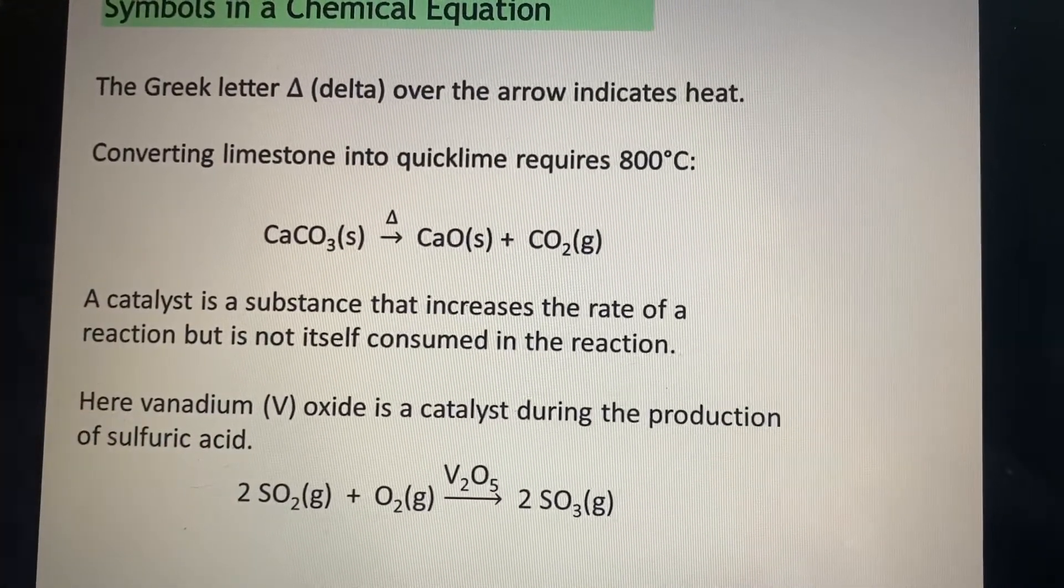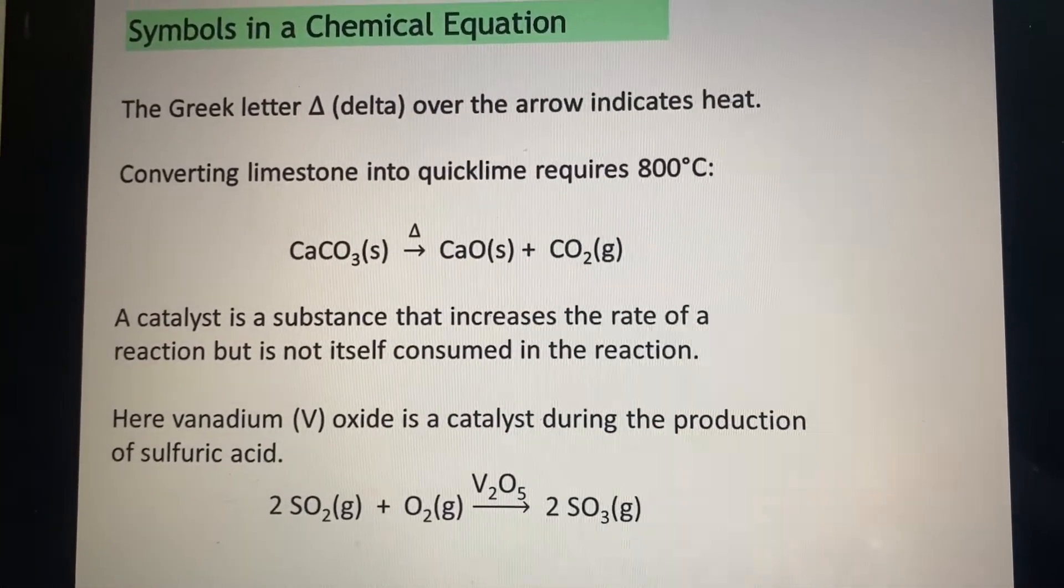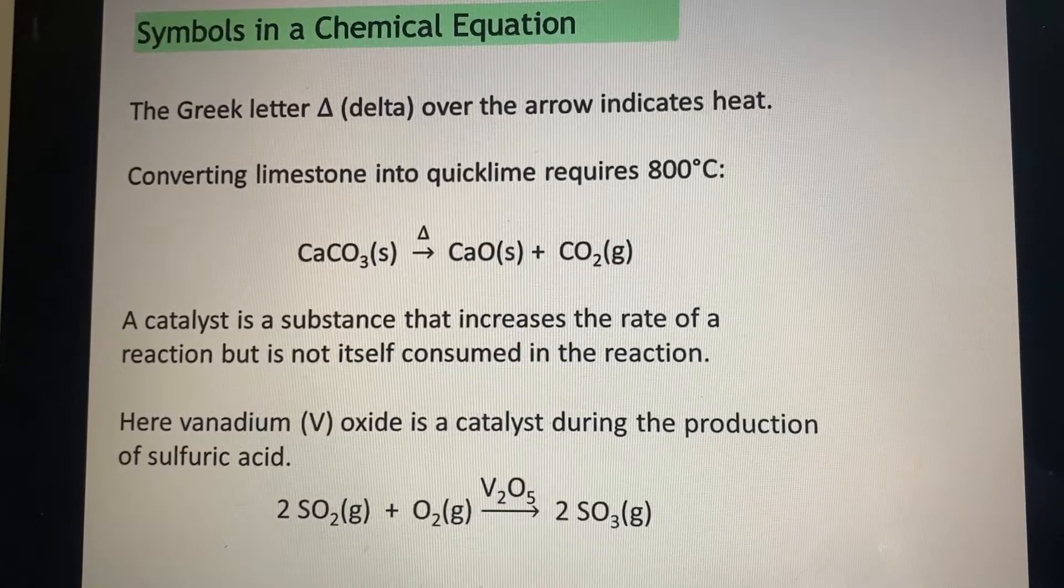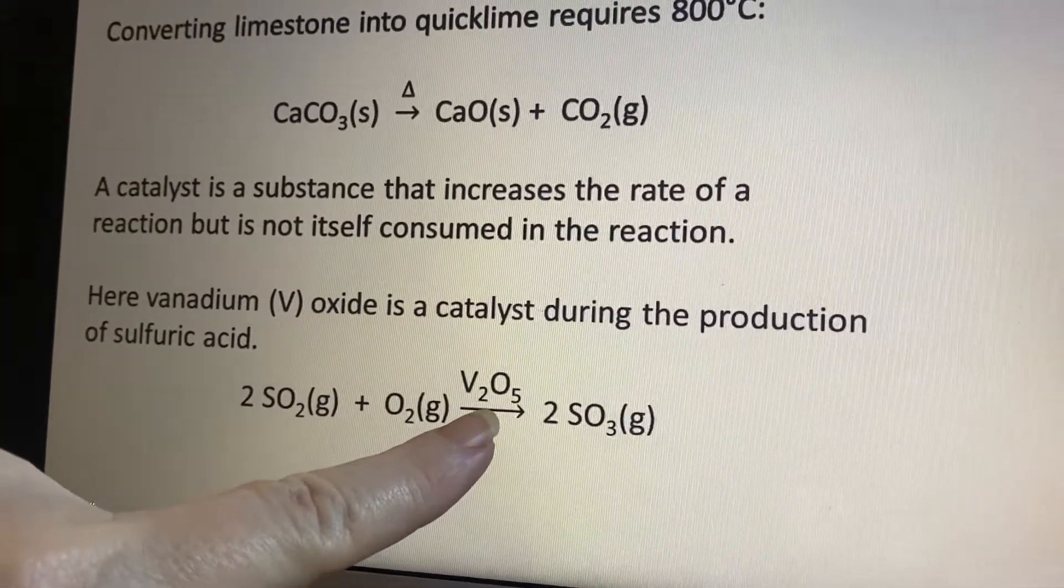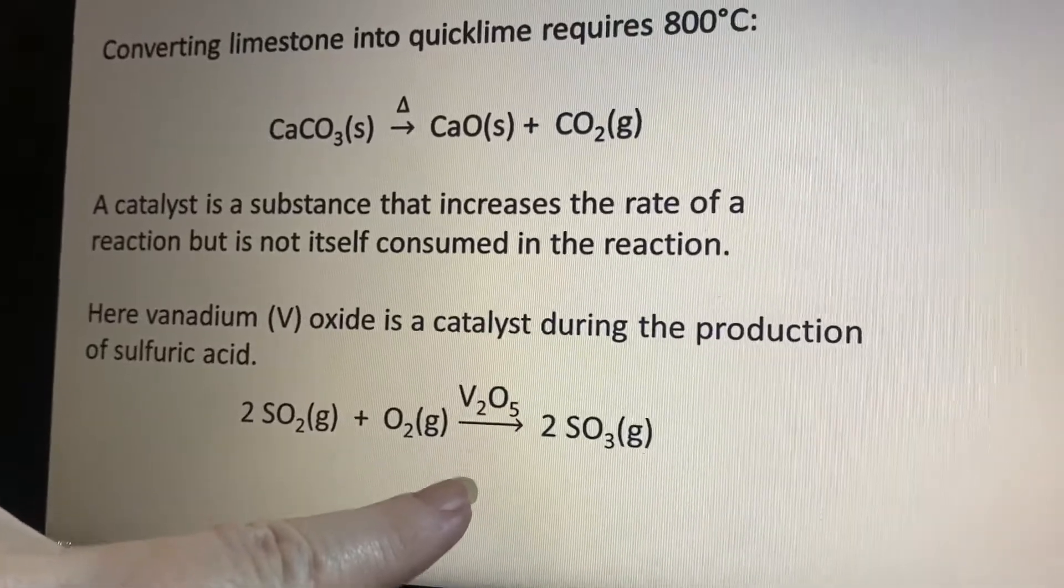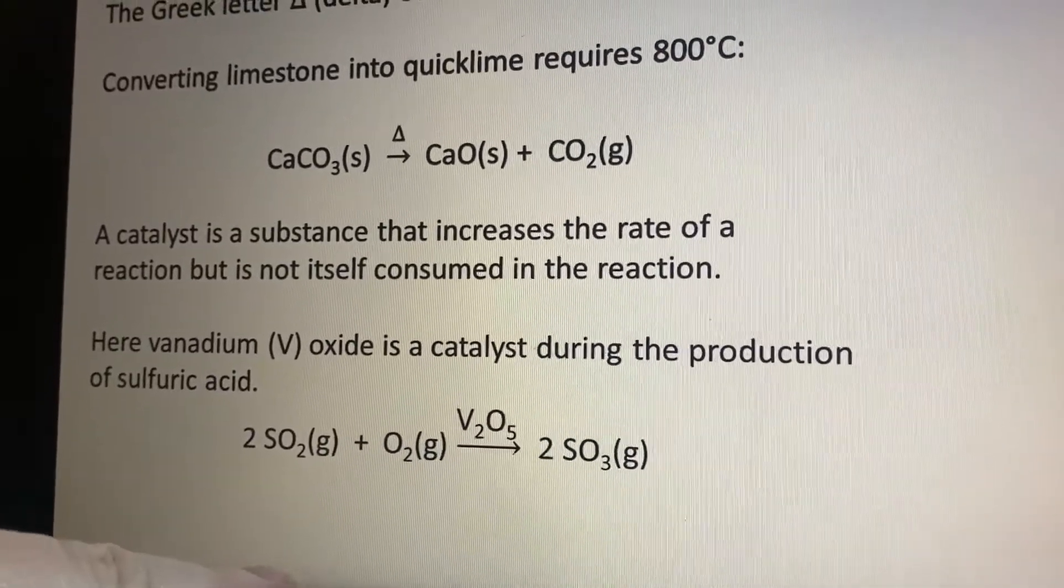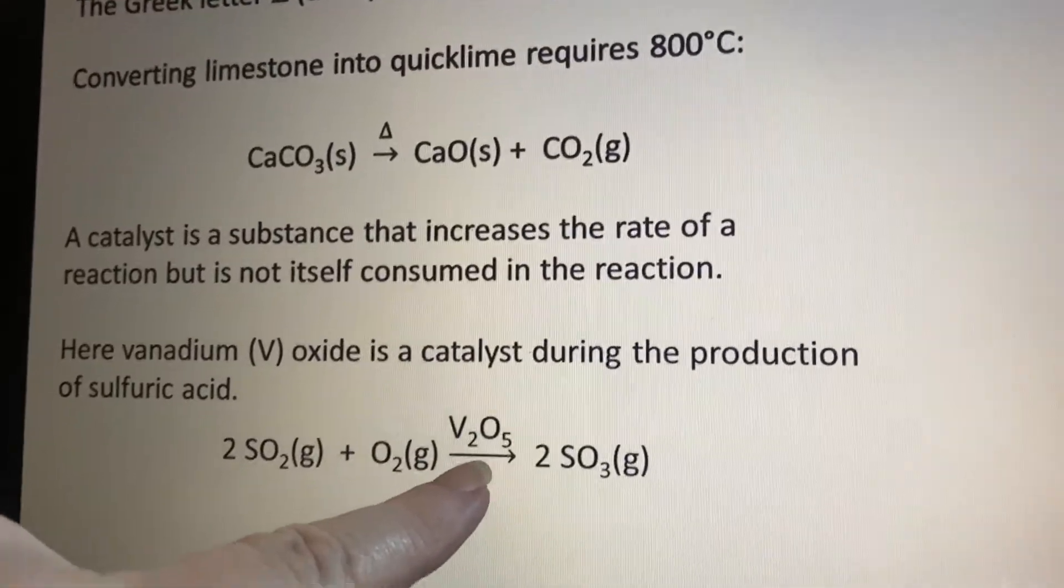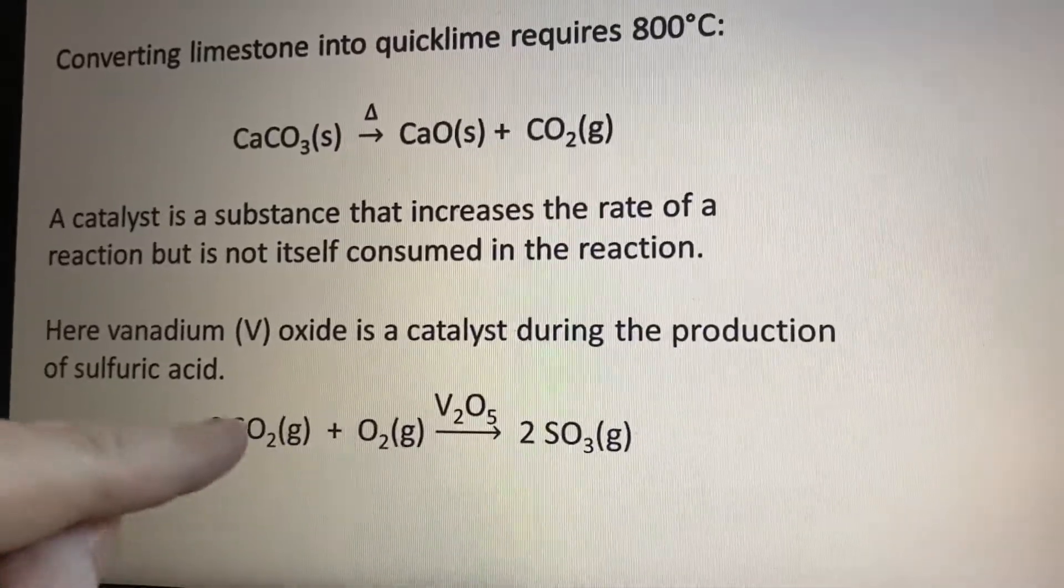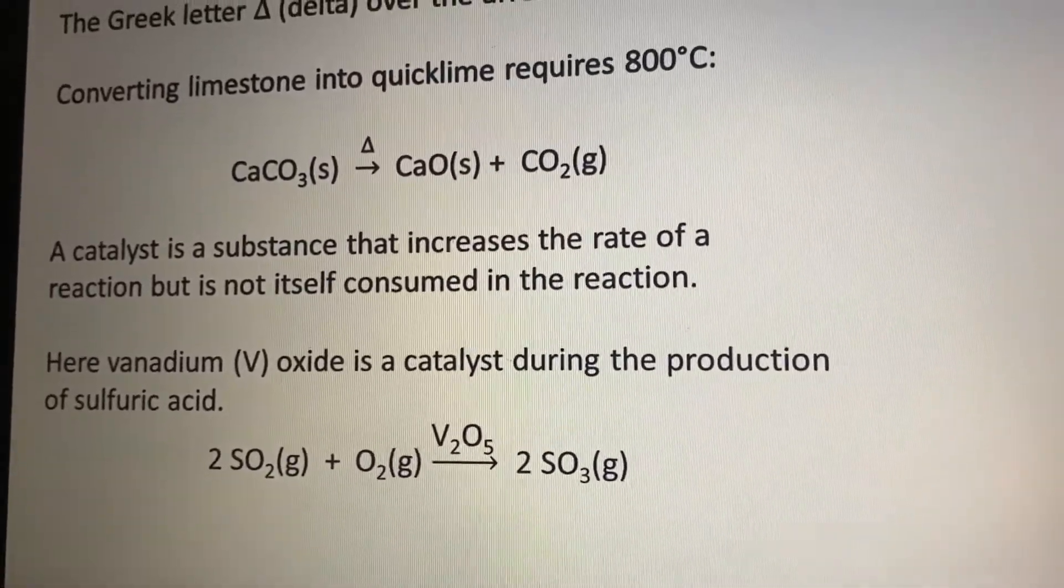Now a catalyst can increase the rate of a reaction, but it doesn't get consumed in the reaction. So it's not part of it, so to speak. This vanadium pentoxide is a catalyst, and this is one step of the production of sulfuric acid. If you take sulfur dioxide and add oxygen, you need this catalyst to convince these things to go ahead and combine and become the sulfur trioxide.